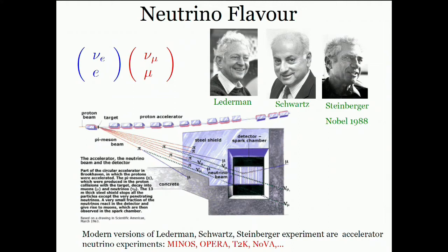Modern versions of the Lederman, Schwartz, and Steinberger experiment are what we call accelerator neutrino experiments — they are still making discoveries today and go under names such as MINOS, OPERA, T2K, NOvA, etc.